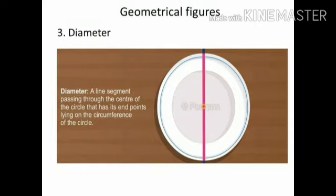Next term is diameter. When a line segment passes through the center of the circle such that its end points lie on the circle, then it is called the diameter of the circle. Diameter has two end points.